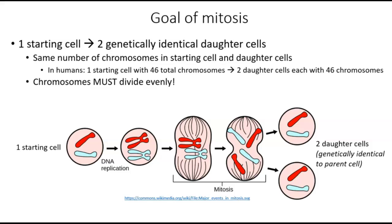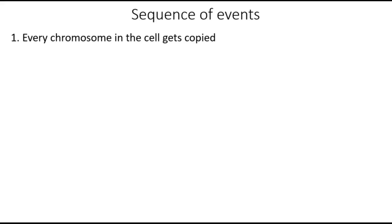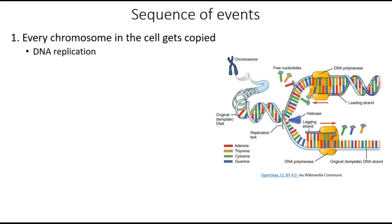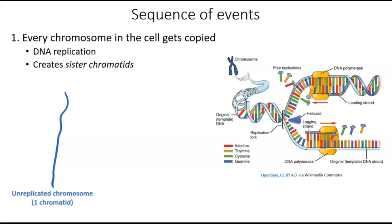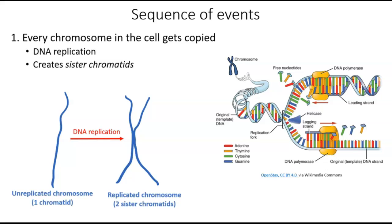This careful division involves several steps, which we're going to go through on the next few slides. The first thing that has to happen is that every chromosome in the cell gets copied, using the process of DNA replication, which we learned about recently. In this process, sister chromatids are created. We go from one chromatid in an unreplicated chromosome to a replicated chromosome with two sister chromatids that are connected at the centromere. This process happens before mitosis during the S phase.